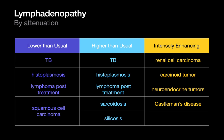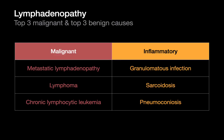When encountering lymphadenopathy, we should offer a differential diagnosis. For malignant mediastinal lymphadenopathy, think about metastatic lymphadenopathy — often from lung cancer — lymphoma, and CLL. Small cell lung cancers often manifest as mediastinal lymphadenopathy with no visible primary on CT. For non-malignant inflammatory causes, think about granulomatous infections, sarcoidosis, and pneumoconiosis. Sarcoidosis is probably the most common cause of mediastinal lymphadenopathy in young adults, with the classic pattern of bilateral hilar and right paratracheal lymphadenopathy.